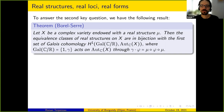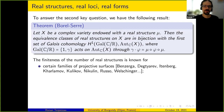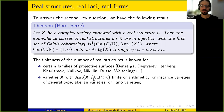Applying this kind of idea, one can show finiteness of the number of real structures for certain families of projective surfaces. You have finiteness whenever Aut°(X)/Aut°_0(X) is finite or arithmetic — this concerns, for instance, varieties of general type, Abelian varieties, or Fano varieties. For all these varieties, there is always a finite number of non-isomorphic real forms.